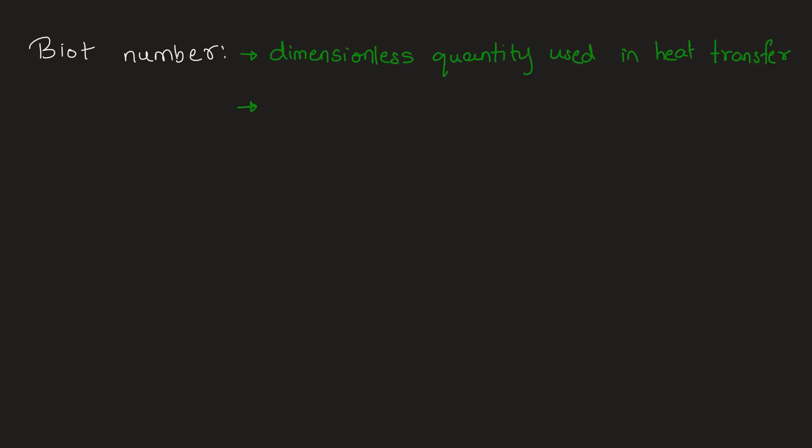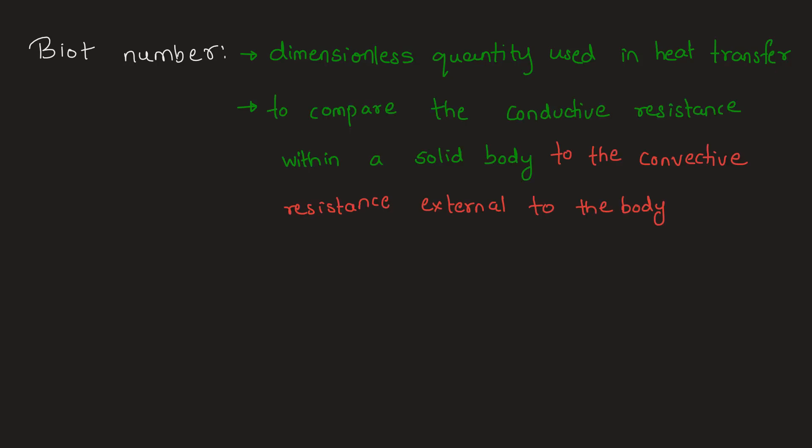Biot number is a dimensionless quantity used in the field of heat transfer to compare the conduction resistance within a solid body to the convection resistance external to that body. We refer to conductive resistance because we are talking about a solid body, so the method of heat transfer is conduction. This is compared to the convective resistance in the exterior of the body — that is, the convective resistance within the fluid surrounding the solid body, which may be gaseous or liquid.